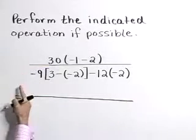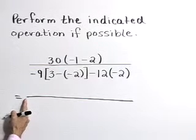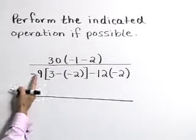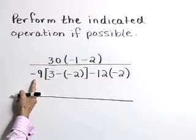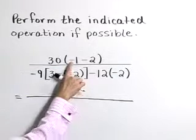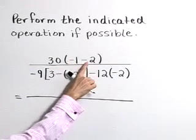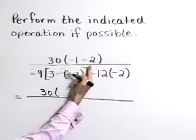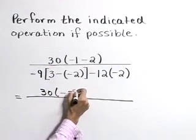This long quotient bar we think of as a grouping symbol in itself separating the numerator and denominator. So we'll work on those two separately and then divide as the last step. Now in the numerator, this negative 1 minus 2, you might think of that as negative 1 plus a negative 2 which gives negative 3.